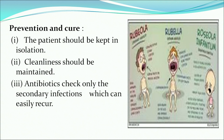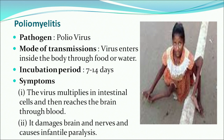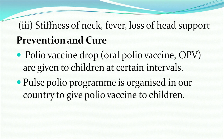Another deadly disease is poliomyelitis, commonly known as polio. Its pathogen is poliovirus and its incubation period varies from 7 to 14 days. The virus multiplies in intestinal cells and then reaches the brain through blood. It damages the brain and nerves and causes infantile paralysis. Oral polio vaccine drops should be given to children at regular intervals. The Pulse Polio Program is organized in our country to administer this vaccine.